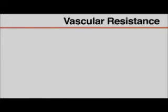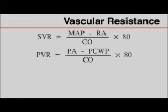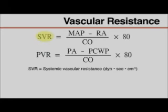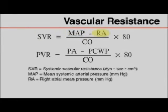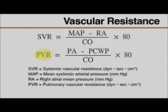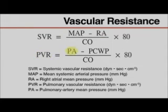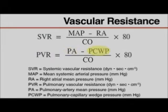Once cardiac output has been measured, systemic and pulmonary vascular resistances can be calculated. The variables include SVR (systemic vascular resistance), MAP (mean systemic arterial pressure), RA (right atrial mean pressure), PVR (pulmonary vascular resistance), PA (pulmonary artery mean pressure), and PCWP (pulmonary capillary wedge pressure). Normal values for cardiac index and vascular resistance are also available in the supplementary appendix.